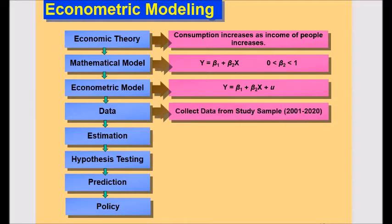Data collection. To estimate the econometric model given in third step means to estimate numerical values of beta 1 and beta 2. You need data. For this purpose, you will obtain secondary data, which is time series data for consumption and income for country under investigation. We will assume data from 2001 to 2020.